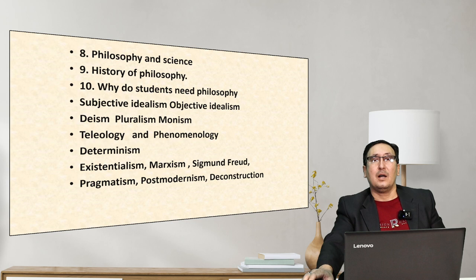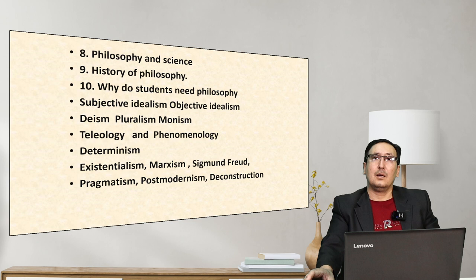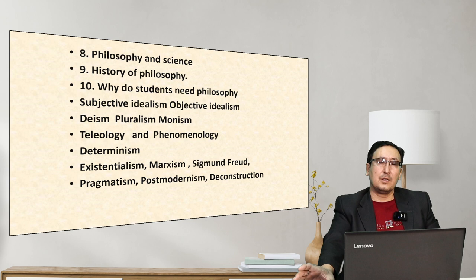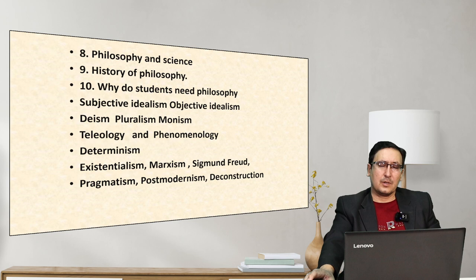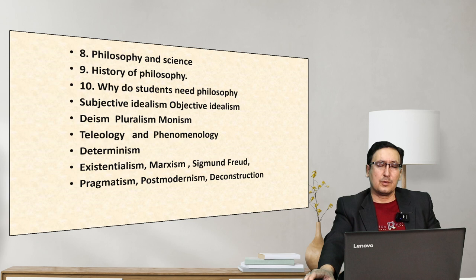Idealism is divided into subjective idealism and objective idealism. By subjective idealism, consciousness is real. By objective idealism, energy is real. Related concepts include: deism — our world was created by God, but God only observes our reality and doesn't participate; our reality develops by its own laws. Pluralism holds there are many gods; monism holds there is only one God; dualism holds there are two gods. Teleology states there is a principle and target — an aim — in our reality. Phenomenology studies phenomena of our world and holds that we understand our world through phenomena.